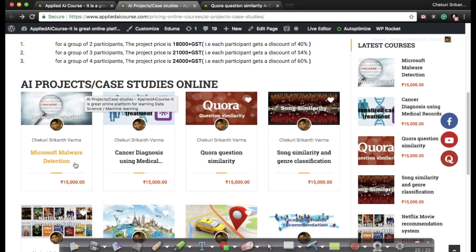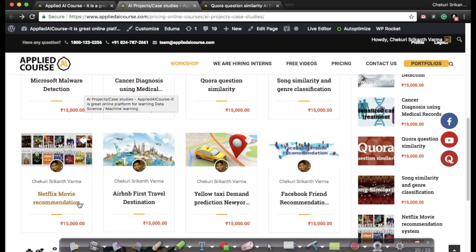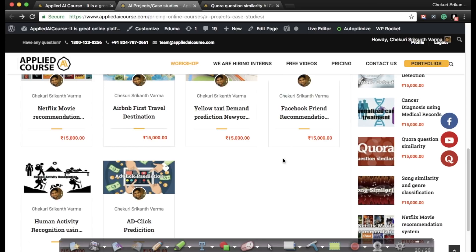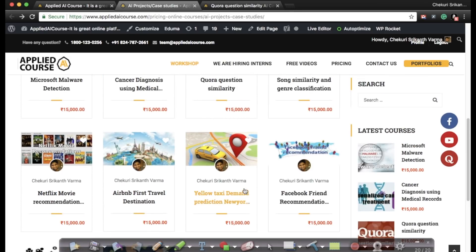On this page you will see a bunch of projects: Microsoft Malware Detection, Cancer Diagnosis Problems, Quora Similarity, Song Similarity Problems, Netflix Movie Recommendations, Taxi Cab Predictions, Facebook Friend Recommendations. There are a bunch of problems here, there are about 11 problems as of today.